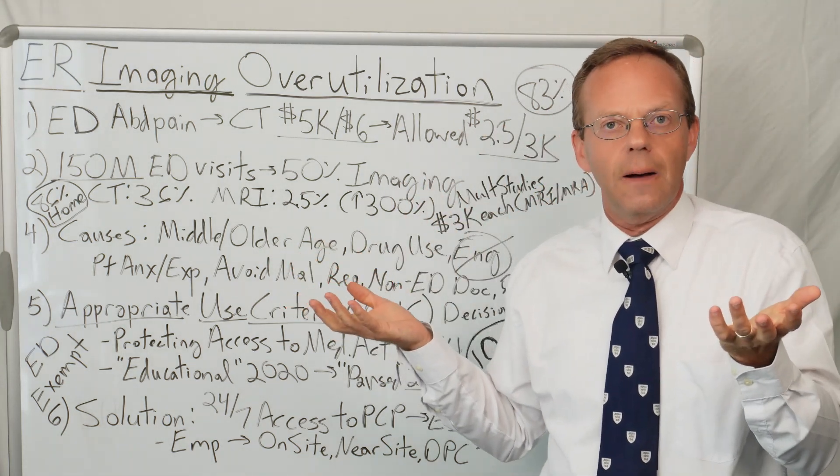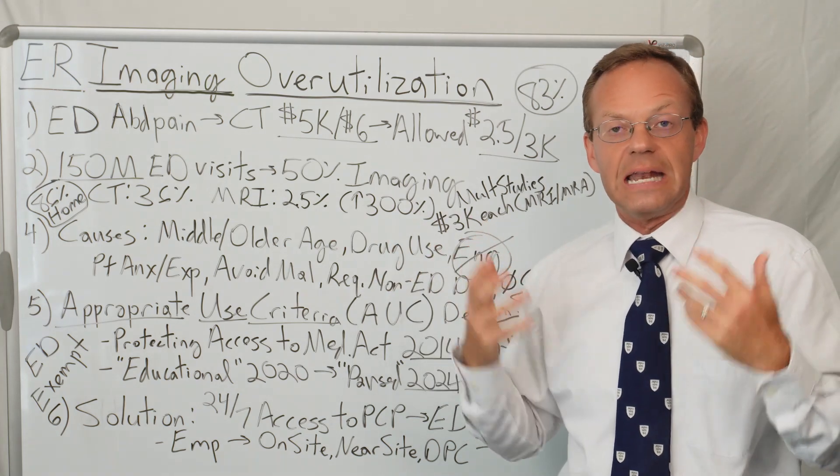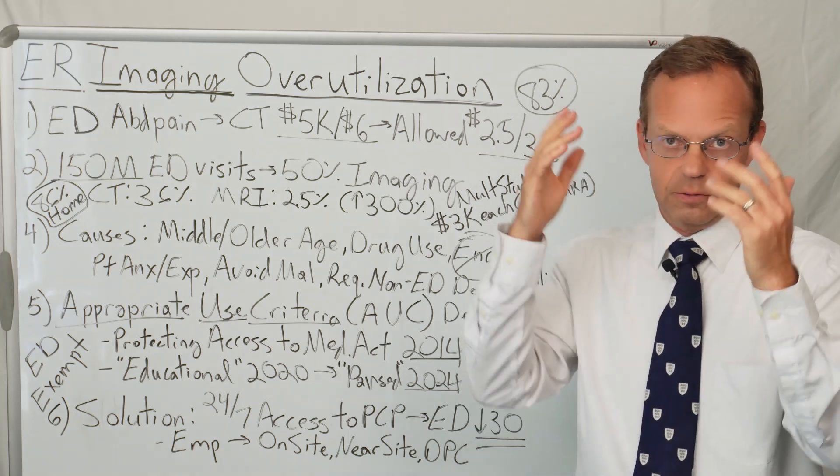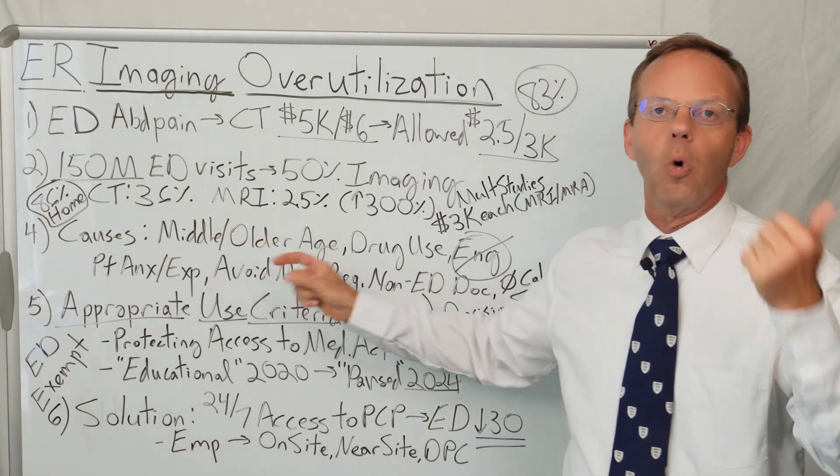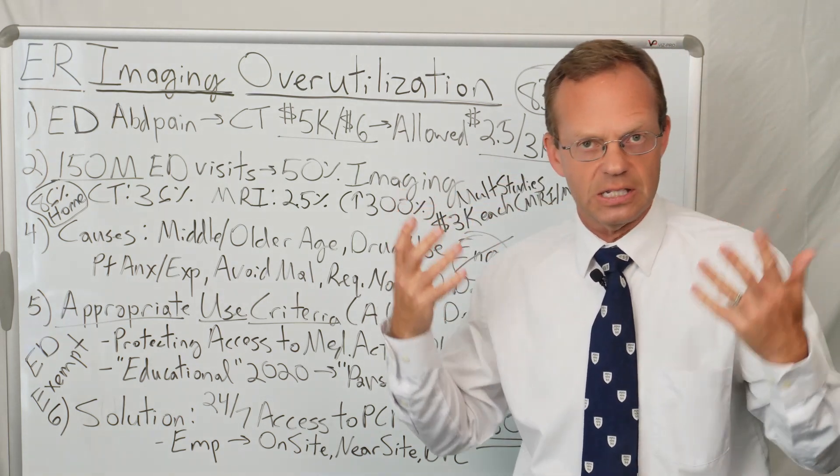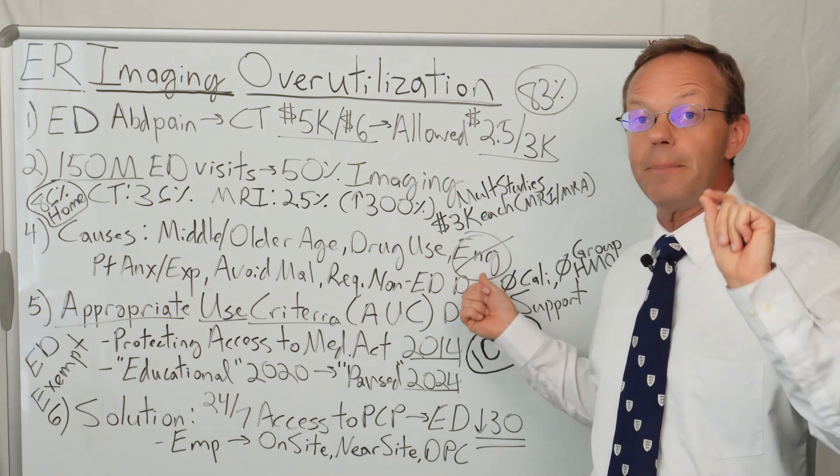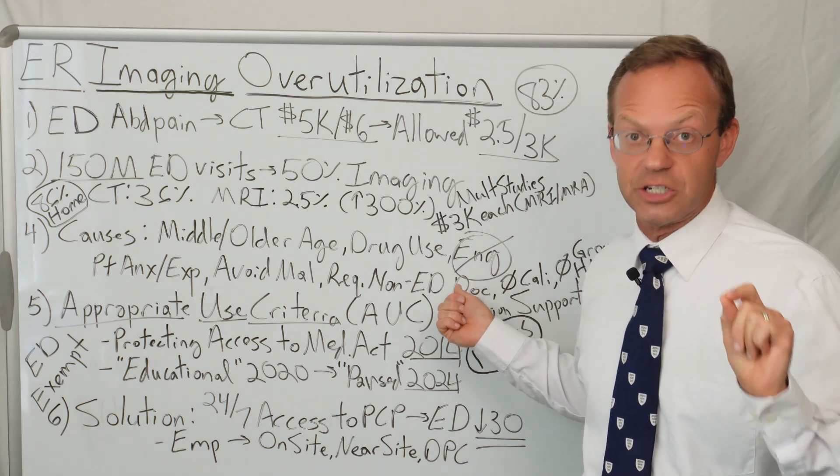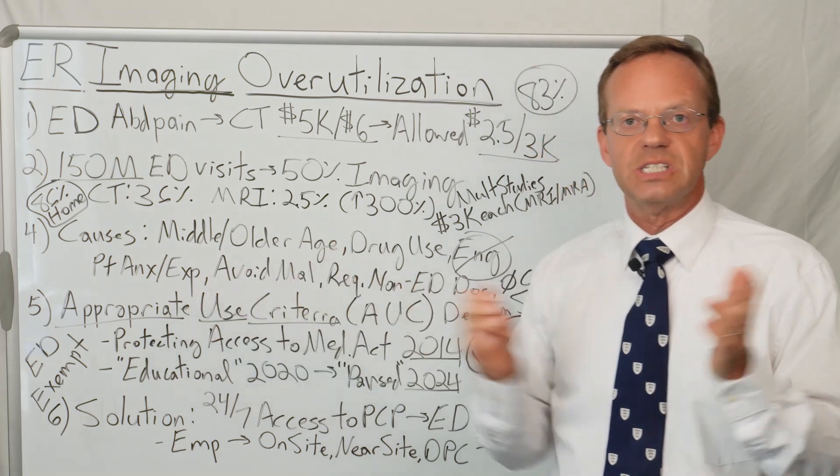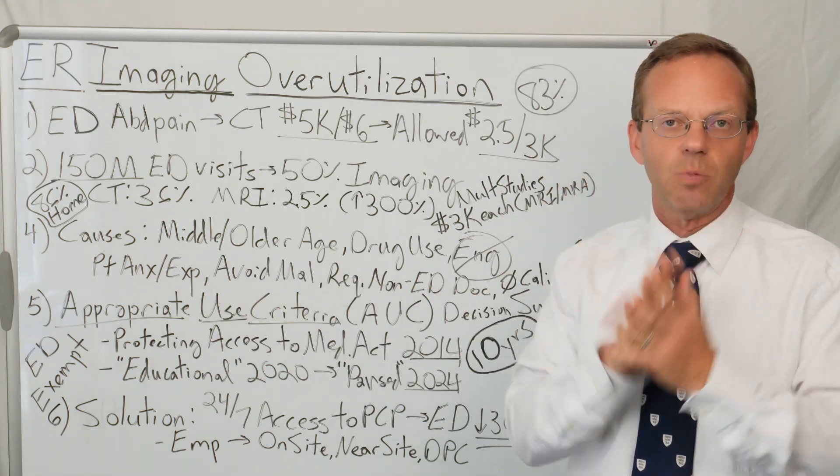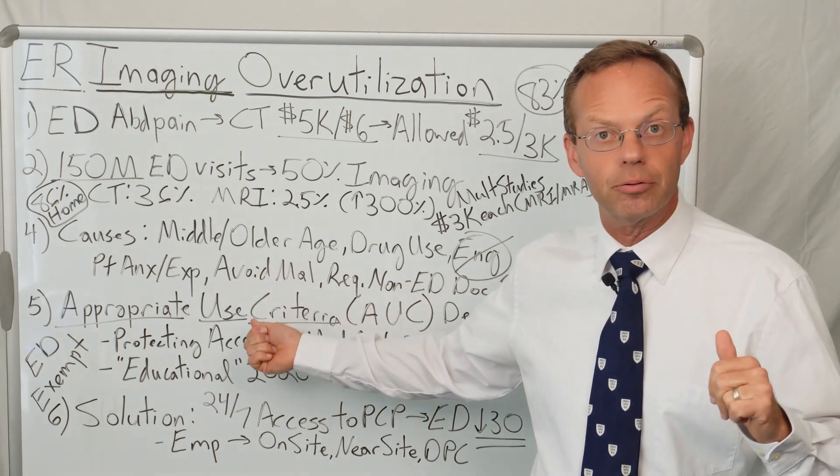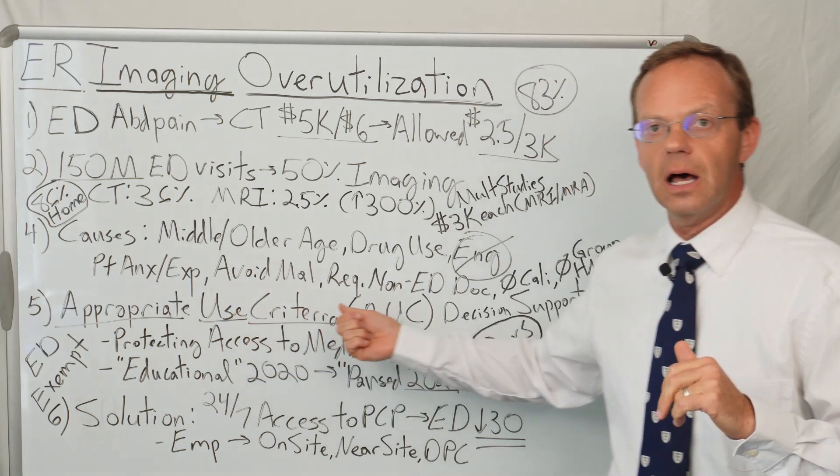What are the associated factors? What are things that increase the likelihood of advanced imaging during an ER visit? A study looked at that. If you had a middle-age or an older patient, that was associated with higher frequency of advanced imaging. If the patient had drug use, if the patient couldn't speak English, there were higher levels of advanced imaging. If the patient had anxiety or had a specific expectation of a CT or MRI, then it was more likely to happen in the ER. Physicians who were particularly careful about avoiding malpractice were more likely to order a CT scan or MRI.